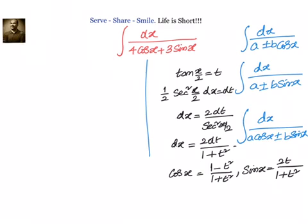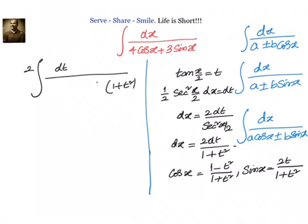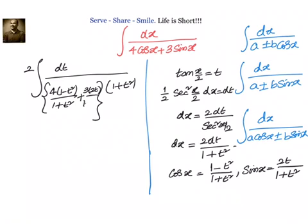Now, once we are done with this, let us go back to the problem and substitute — transform from dx to dt. Now dx equal to 2 dt by 1 plus t square. We will now do the substitution: 4 into cos x, that is 4 into 1 minus t square divided by 1 plus t square, plus 3 into sin x, that is 3 into 2t divided by 1 plus t square. Let us simplify that.